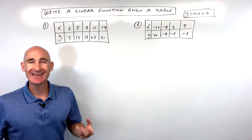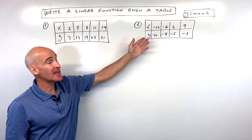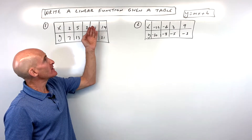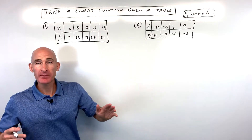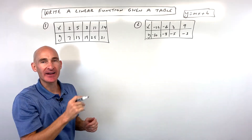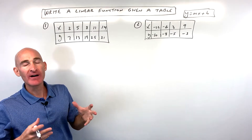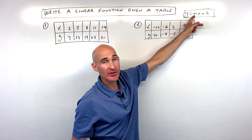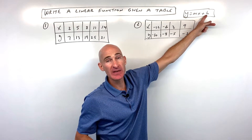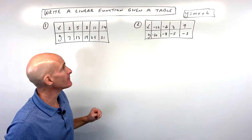In this video, you're going to learn how to write a linear function when you're given a table. We're going to go through two examples. So what does that mean, linear function? Linear means like a straight line. And we want to analyze these tables and find out what is the slope — that's our m value — as well as b, which is the y-intercept. Those are the two components we're going to need to figure out.